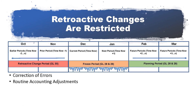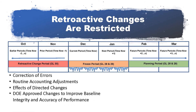Any routine accounting adjustments to ACWP, including retroactive rate adjustments, and DOE-directed or approved changes, may require an adjustment to previously reported BCWS, BCWP, or ACWP. These types of changes are rare, but occasionally, in order to accommodate the negotiation of authorized scope, it may be required to make a budget adjustment in prior months. In addition, if a DOE decision is made regarding the allowability of historical costs, the ACWP will be adjusted accordingly. Any changes required to improve baseline integrity and accuracy of the performance measurement data should be exceptionally rare and require prior DOE approval.